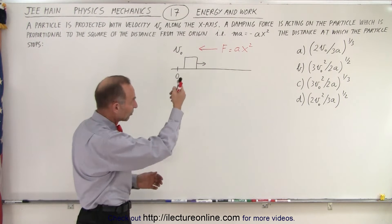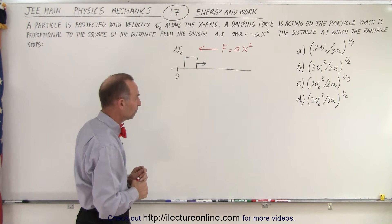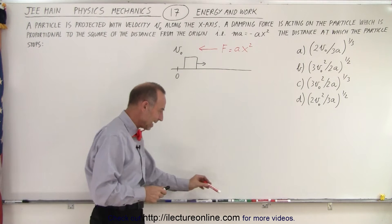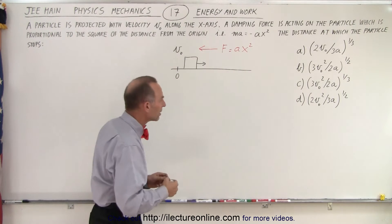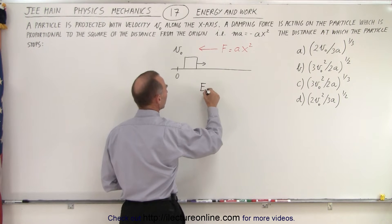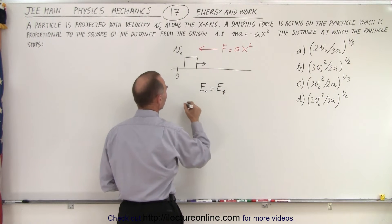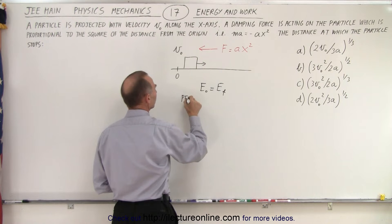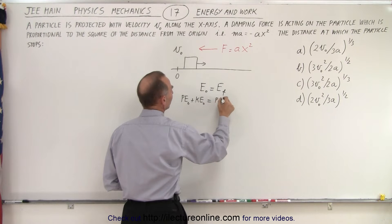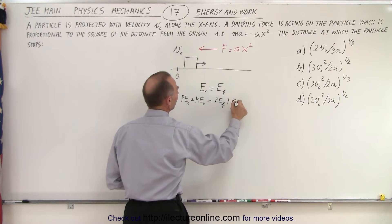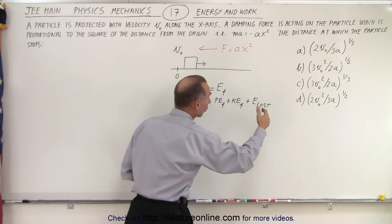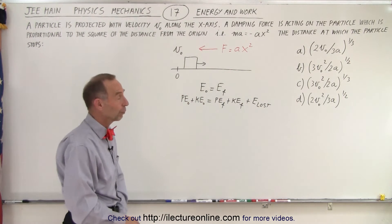The force is acting in a negative direction — that's where the negative sign comes from. So at what point will the particle come to a stop? We need a strategy: energy initial equals energy final. Any potential energy initial plus kinetic energy initial must equal potential energy final plus any energy lost due to friction or, in this case, a retarding force.